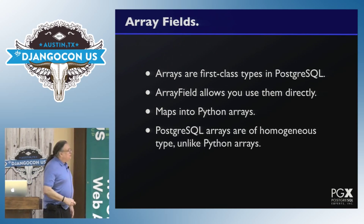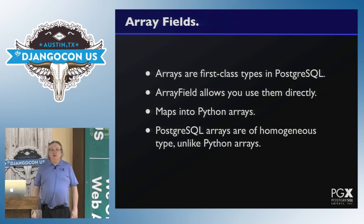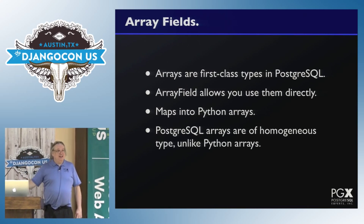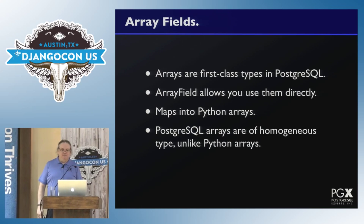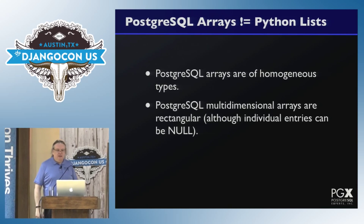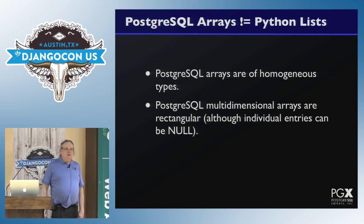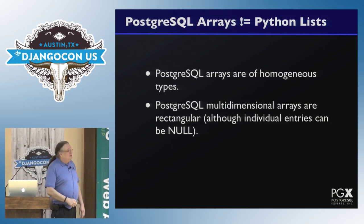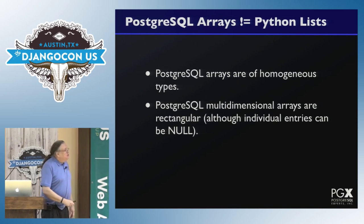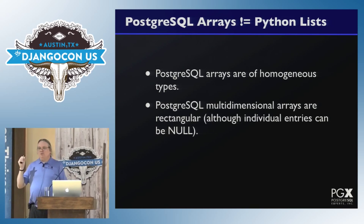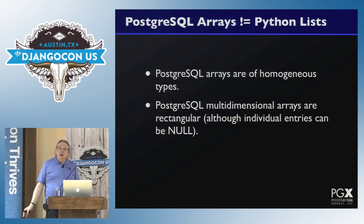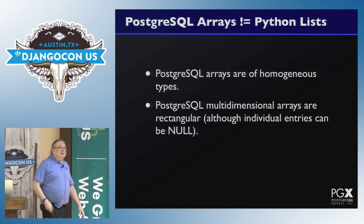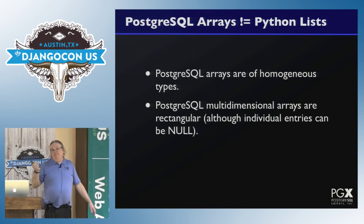One thing to remember is that Postgres arrays are of homogeneous type, unlike Python lists. So you pick a type — ints, strings, something — and that's what you get in a Postgres array. Also, Postgres multi-dimensional arrays are rectangular, just like Fortran. They're traditional multi-dimensional arrays where you say I'm going to create a three-dimensional array with dimensions of 5, 7, and 10, and the whole thing appears. Individual entries can be null if you need to represent a hole, but it's not like a list-of-lists structure where each element can be any size.